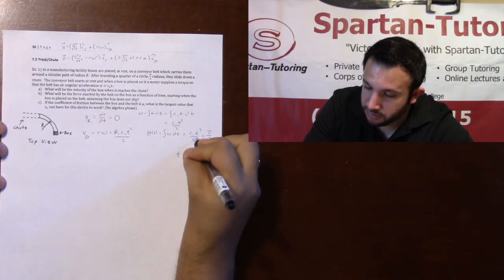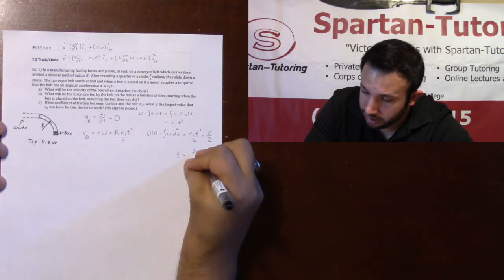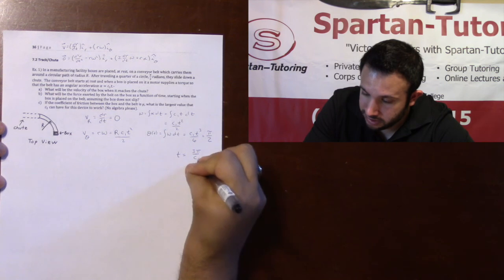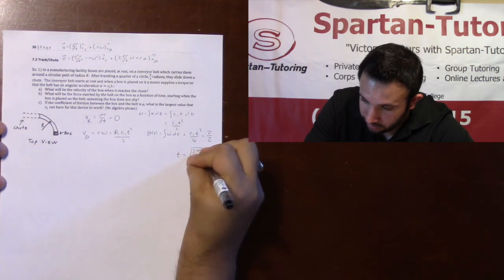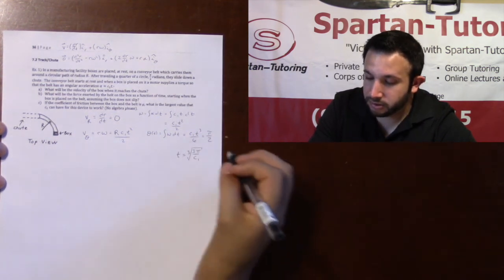t would simply just be, that would be a 3. I'd have 3 pi over c1, and it'd be the cube root of that. That would be your time.